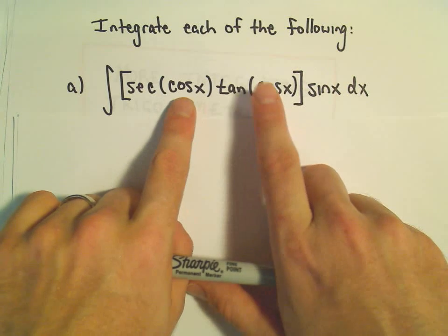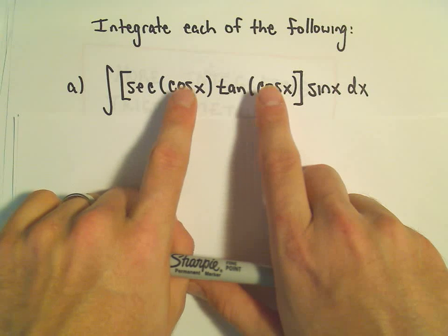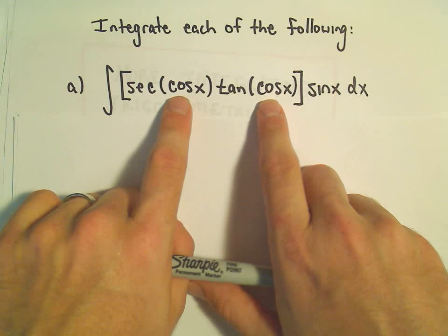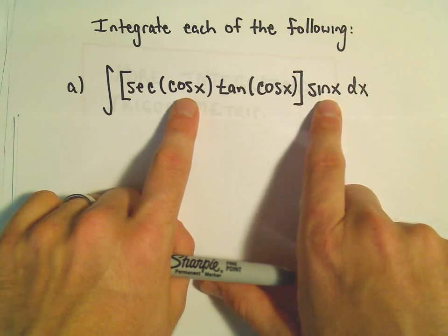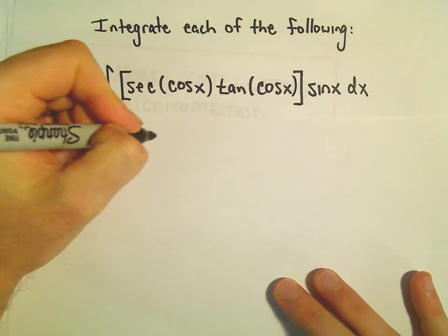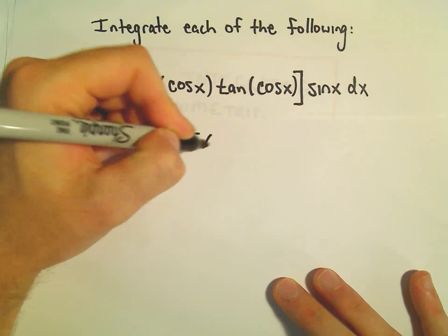So that tells me, hey, maybe if I make this into a single variable by doing a u substitution, as long as du is in the problem. And well, the derivative of cosine is sine, it looks like everything would work. So if we let u equal cosine x...